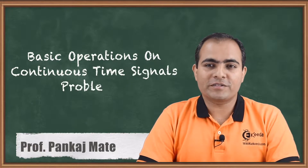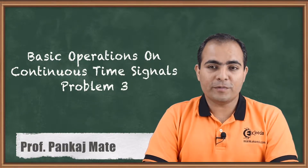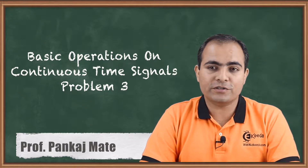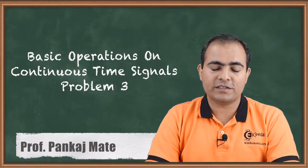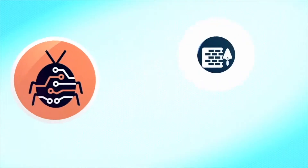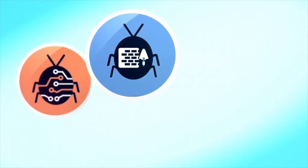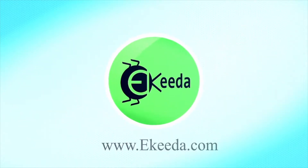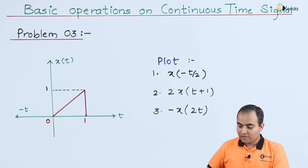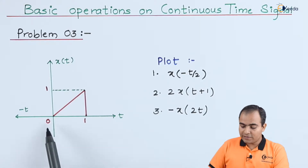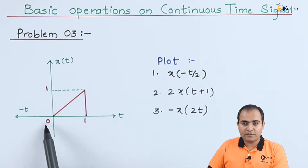Hello friends, today we are going to study problem number 3, which is based on continuous time signals or basic operations on continuous time signals. In problem number 3, a simple ramp wave is given and it is available between 0 to 1.